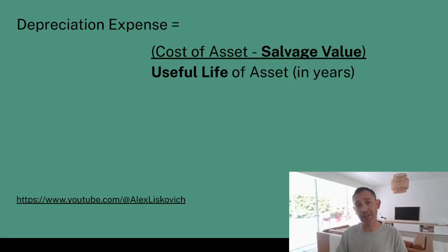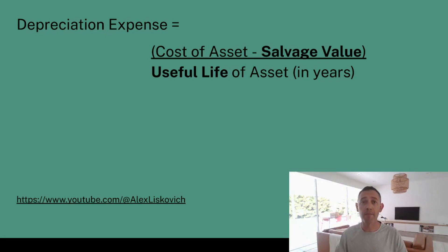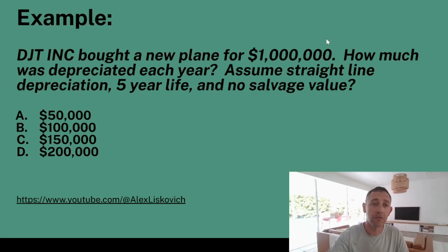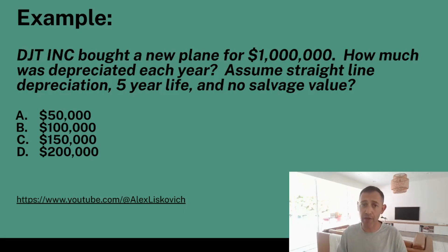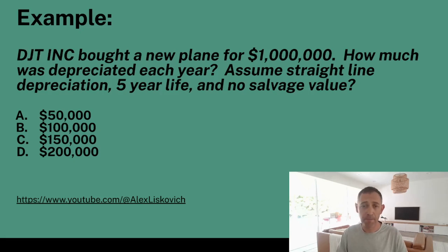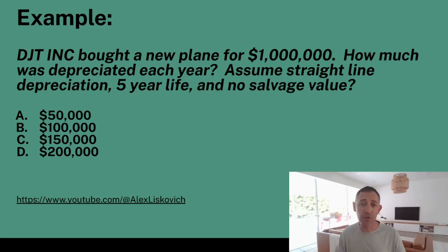So we're going to do a bunch of practice questions. If you're good with these, you're probably ready for this topic and set for the exam, at least with respect to straight-line depreciation. Example number one: DJT Incorporated bought a new plane for one million dollars. How much was depreciated each year? Assume straight-line depreciation, a five-year life, and no salvage value. Pause the video, do the calculation, then come back and see if you got the same answer.